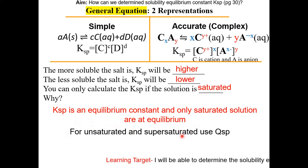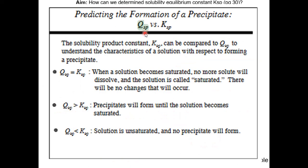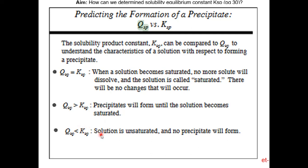For unsaturated and supersaturated solutions, use Qsp. Qsp is similar to the reaction quotient Q, which we covered in the last lesson. The solubility product constant Ksp can be compared to Qsp to understand the characteristics of a solution with respect to forming a precipitate. When Qsp equals Ksp, the solution is saturated — no more solute can dissolve and no more changes will occur. If Qsp is greater than Ksp, a precipitate will form until the solution becomes saturated. If Qsp is less than Ksp, the solution is unsaturated and no precipitate will form.